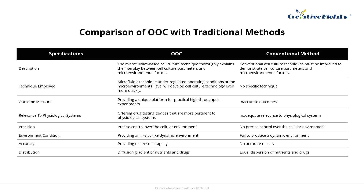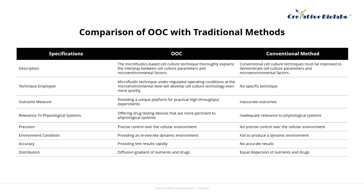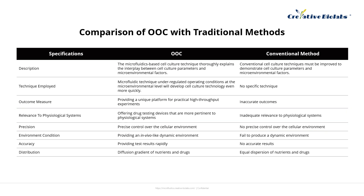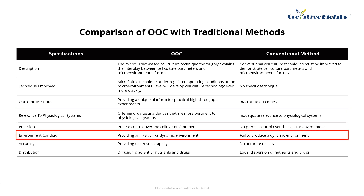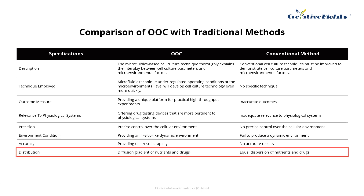This table also compares OOC and traditional methods across eight aspects: description, technique employed, outcome measure, relevance to physiological systems, precision, environment condition, accuracy, and distribution.